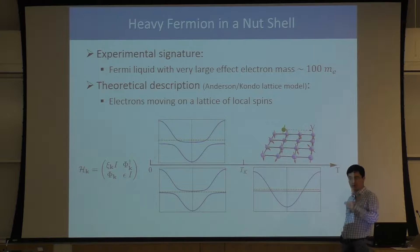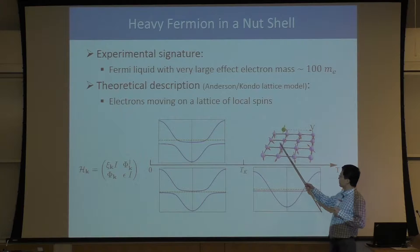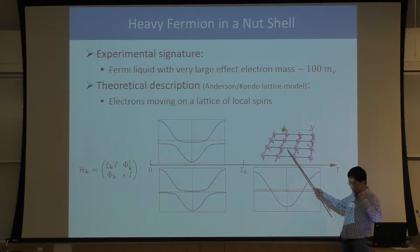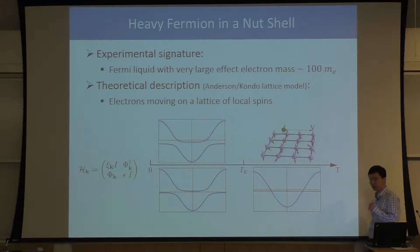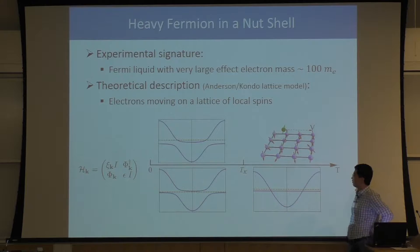For all heavy fermion compounds, we have at least two different species of electrons. In the Kondo lattice model, the first species of electrons forms a spin lattice. On this lattice, each site can only have one electron — there is a huge on-site repulsion. We have one electron per site, these electrons cannot move, the charge degree of freedom is totally frozen, but we still have spin degrees of freedom. So this is basically a lattice of spins, each with spin one-half.